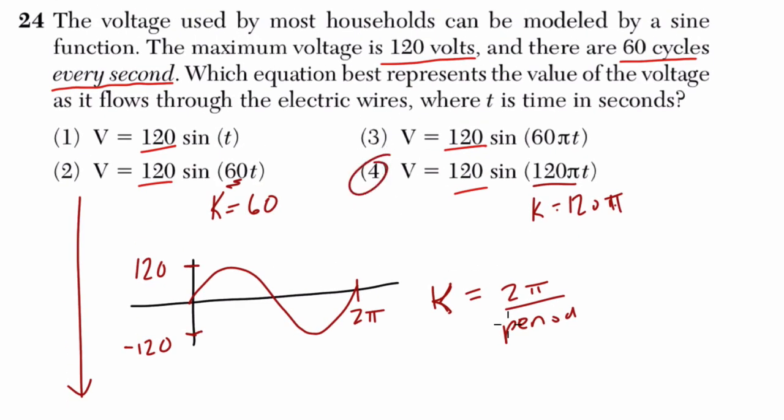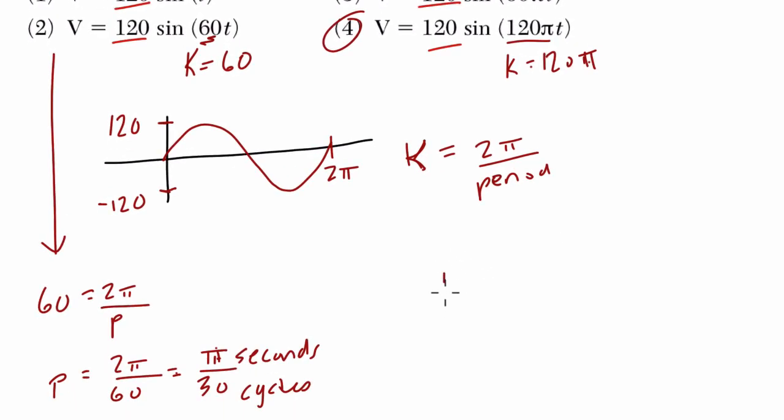And in choice 4, this will be the answer because if k is 120π, let's say k is 120π, that equals 2π over the period. So if we solve for the period, the period is going to equal 2π divided by 120π. And here when we divide, the π's cancel out, π divided by π is 1, and 2 over 120 is 1 over 60.